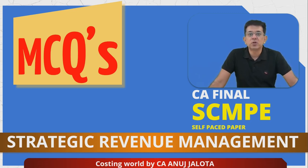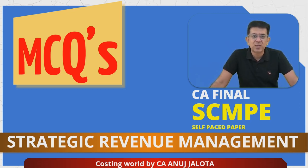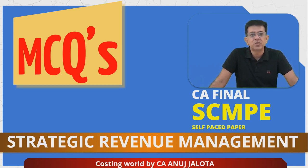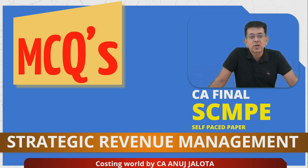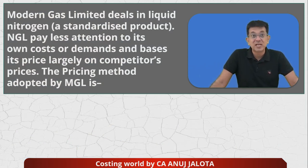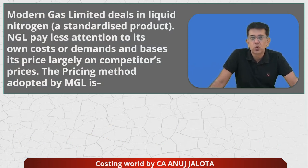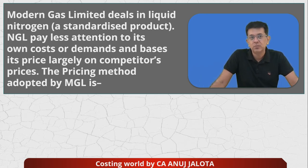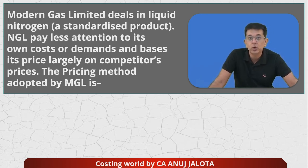Hi guys, we are doing MCQs of CA Final SCMP self-paced paper under the new course. This kind of paper assumes you know everything about business. Today's MCQ is about Modern Gas Limited, which deals in liquid nitrogen, a standardized product. MGL pays less attention to its own cost and bases its pricing largely on competitors' prices. What is the pricing method adopted by MGL?